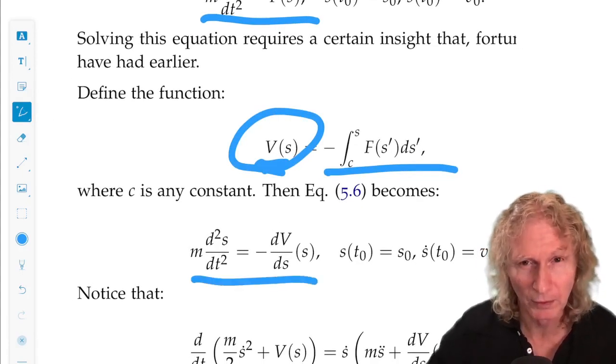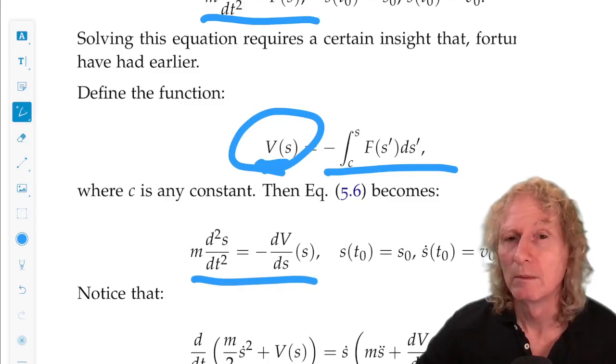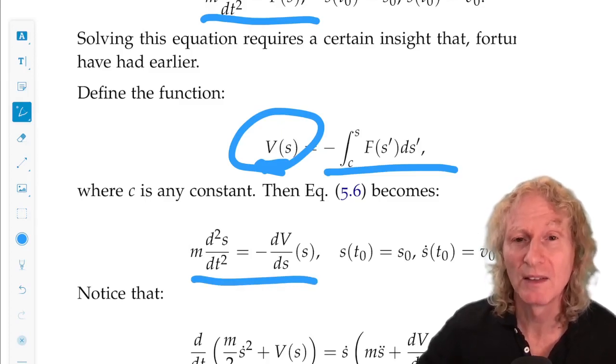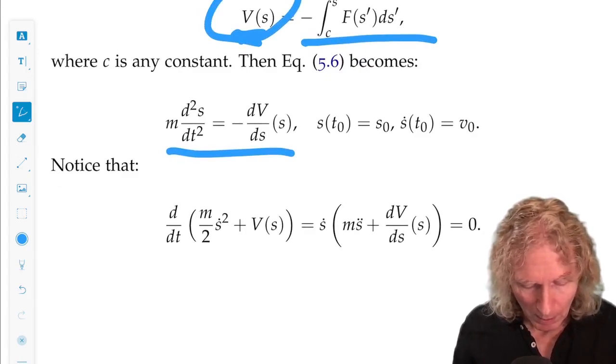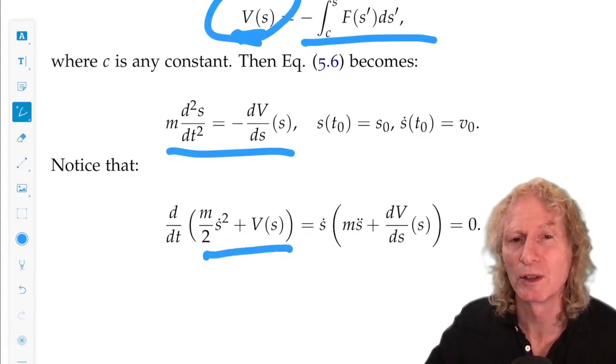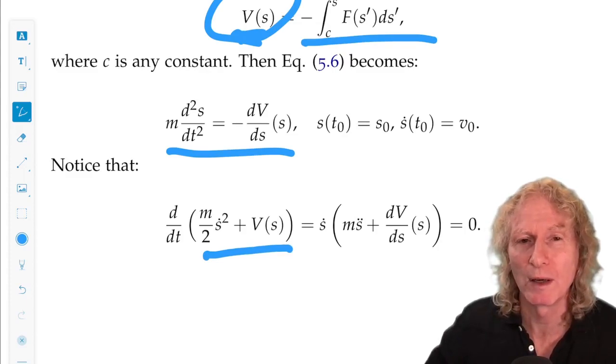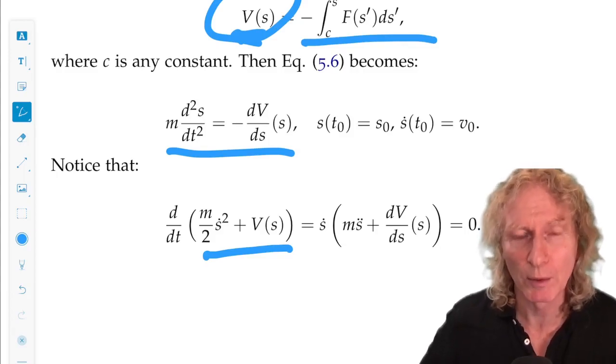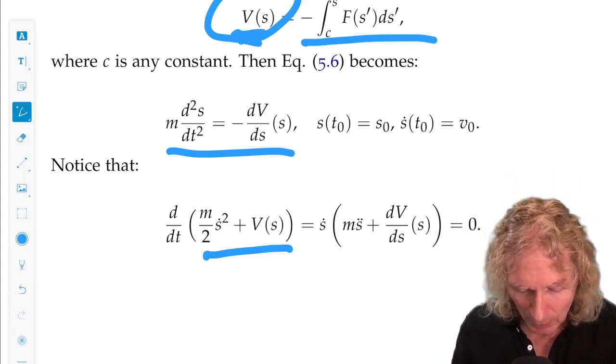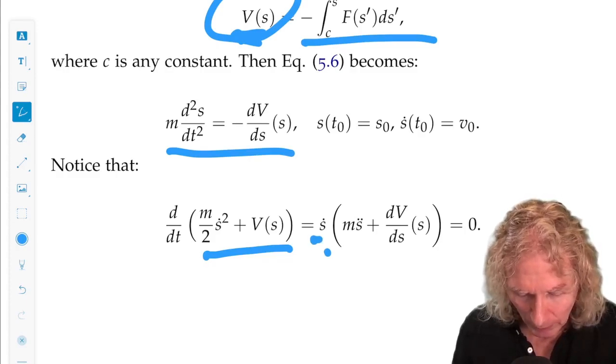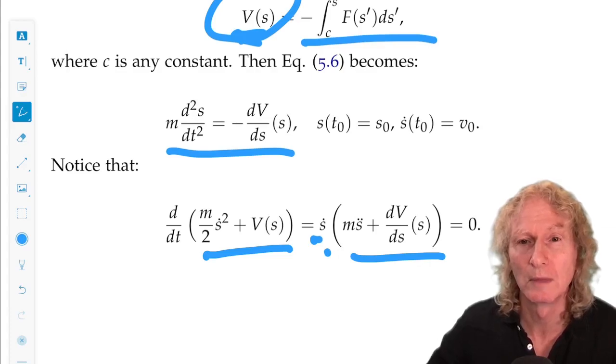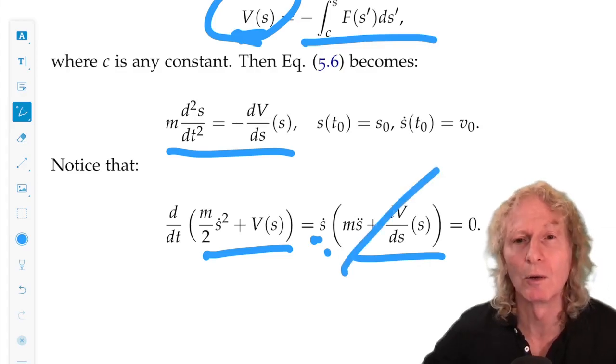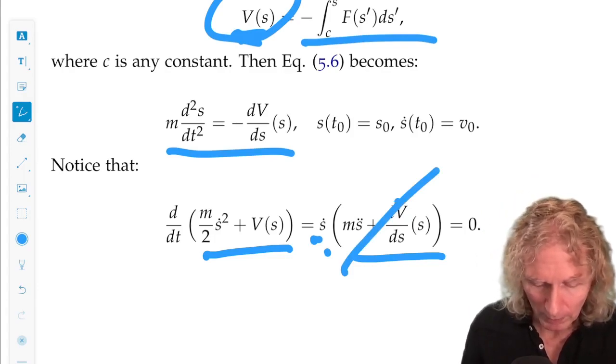Now with this definition, Newton's equation look like this: m d²s/dt² equals minus dV/ds. Now comes something very important. I don't know where this solution came from, m/2 ṡ² + V(s), but we're going to differentiate it with respect to time. If we do that using the chain rule, ṡ comes out, and we get ṡ times the quantity m s̈ + dV/ds equals 0. Why is it 0? Because this is 0. It follows directly from Newton's equations.